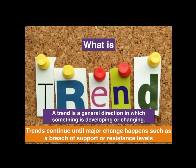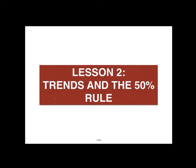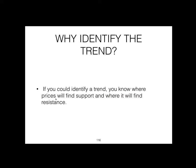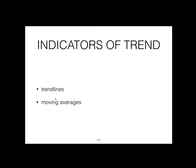Lesson Two: Trends and the 50% Rule. Before you enter a trade, first and foremost you must look at the trend. A trend is a general direction in which something is developing or changing. Trends continue until a major change happens such as a breach of support or resistance. If you can identify the trend, you know where prices will find support and where they will find resistance. There are two important ways to determine trend: first using trend lines, second using moving averages.